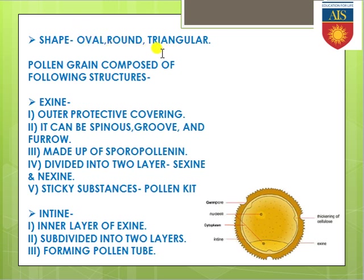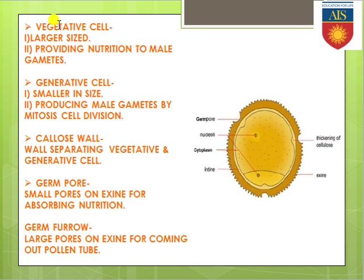Keep it in mind that the pollen grain is commonly composed of the following structures: the first is exine, which is the outermost layer; next is entine, which is inside the exine; then there is a vegetative cell layer or vegetative cell present in the cytoplasm of the pollen grain.